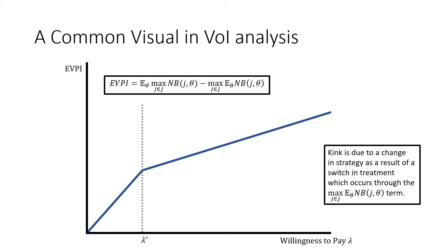The answer lies in the computation of our expected value of perfect information curve. We'll see a change at this threshold value lambda due to a change in strategy, which results in a switch in treatment. This switch occurs through the expected value without perfect information curve, where we're choosing based on best response.